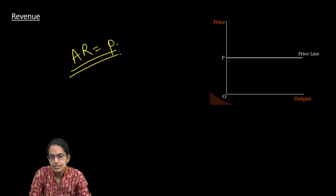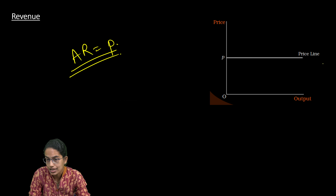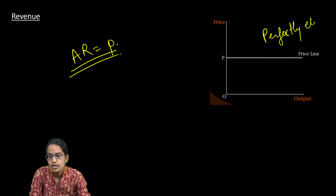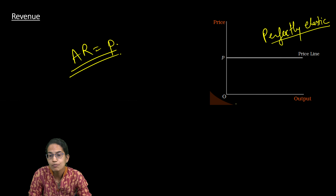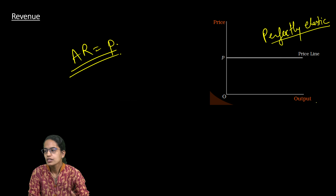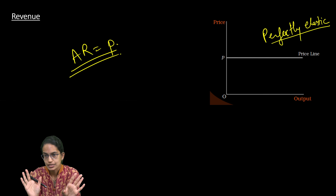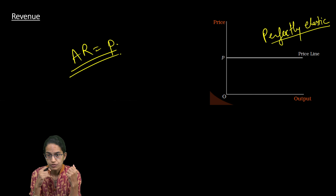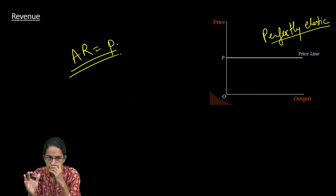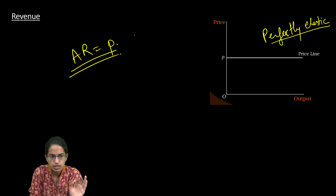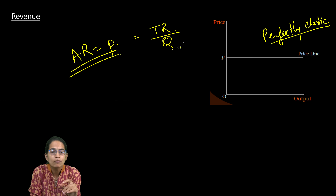Average revenue equals the price curve, and this price curve is a horizontal straight line, which shows that it is perfectly elastic in nature. Since it is perfectly elastic, the price remains the same across any number of units of output. A firm can sell 20 units, 40 units, or 1000 units, and the price remains the same. That is what average revenue represents.